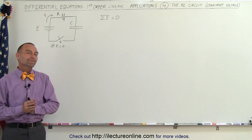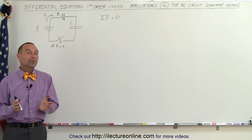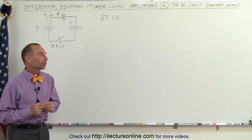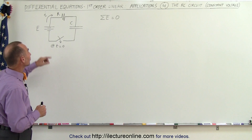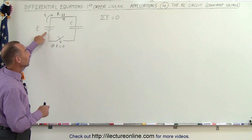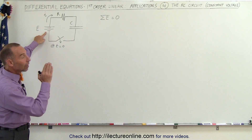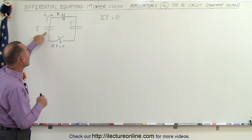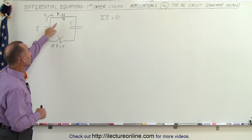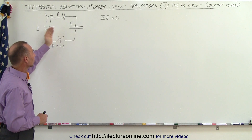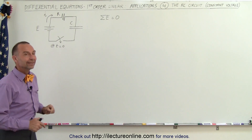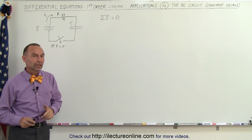Welcome to our lecture online. Our next example is going to be a circuit with a capacitor in it. We have a constant voltage, not a time-varying voltage, a resistor, capacitor, and a switch closing at t equals zero.